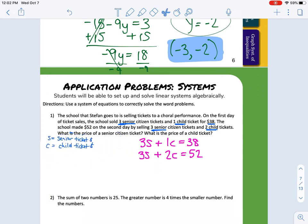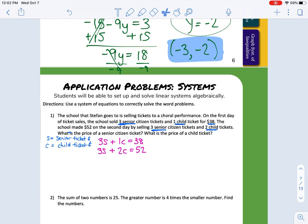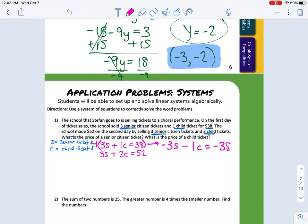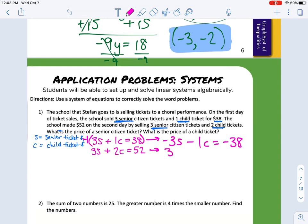I'm going to move this over to solve. I can use substitution or elimination. I'm going to use elimination because it's easy enough to multiply this whole top equation by negative one so that 3 and negative 3 are opposites. So negative 3s minus 1c equals negative 38. Then we bring the second equation over: 3s + 2c = 52. We cancel those out and solve for the price of a child ticket. So c equals 14.